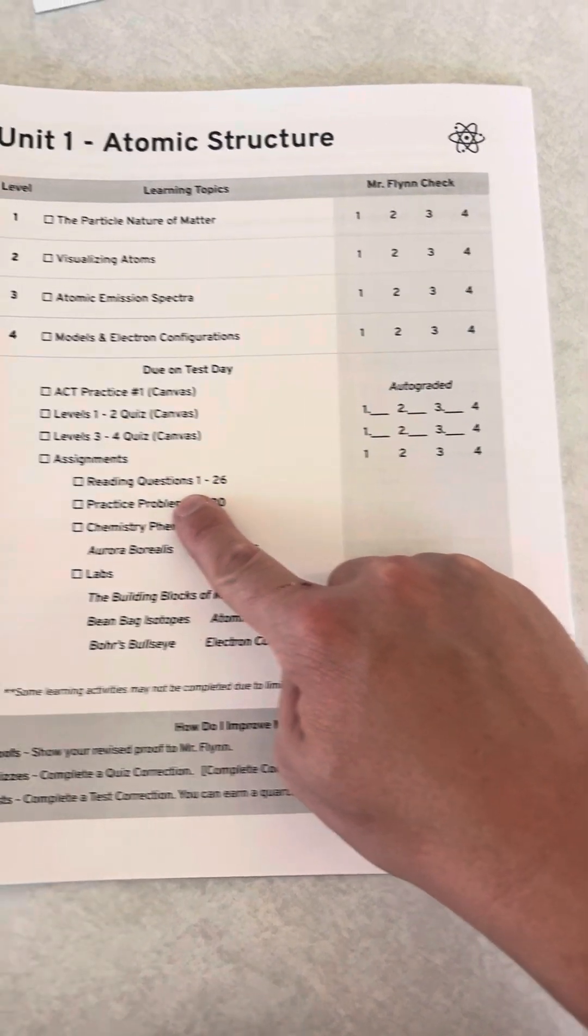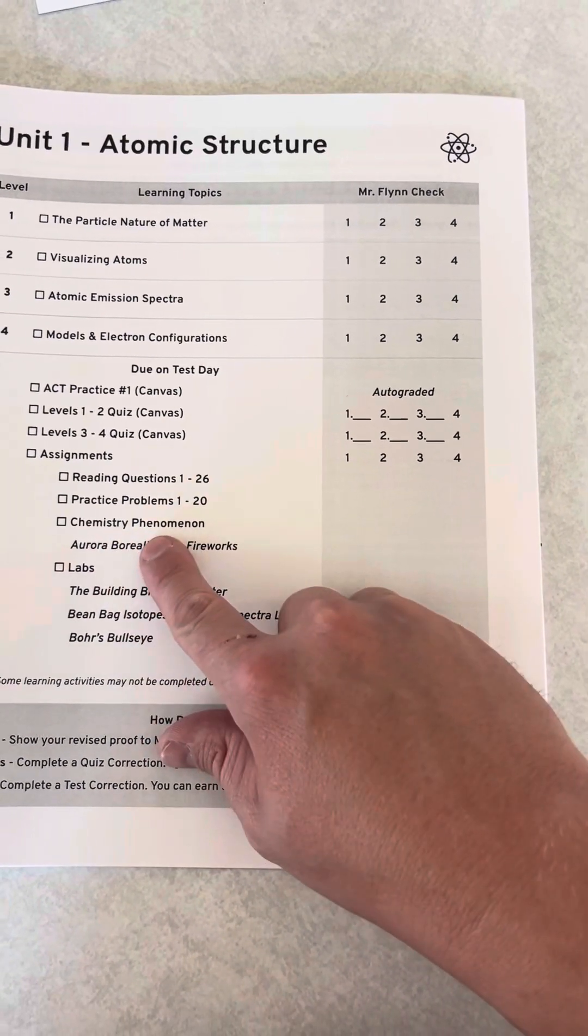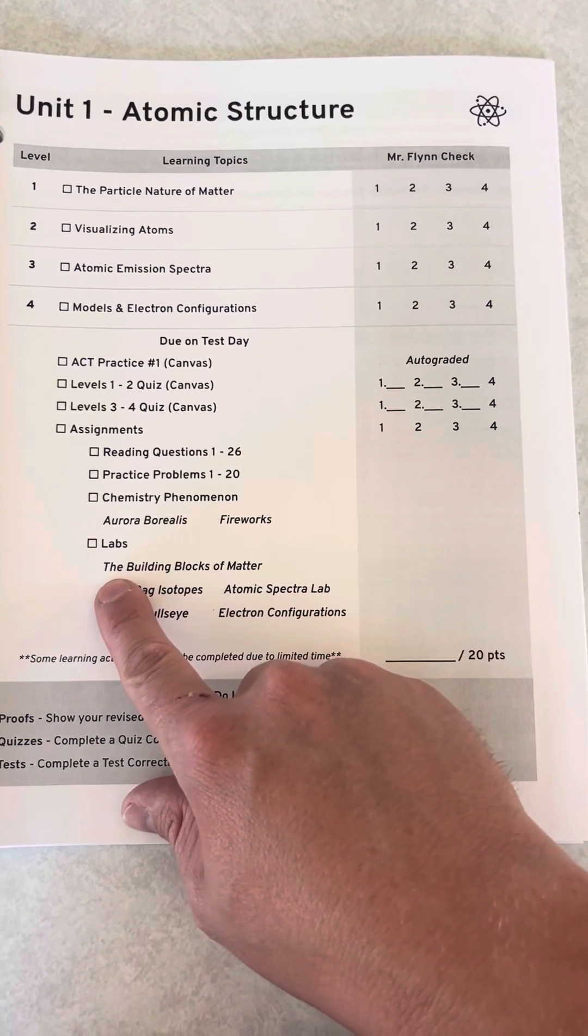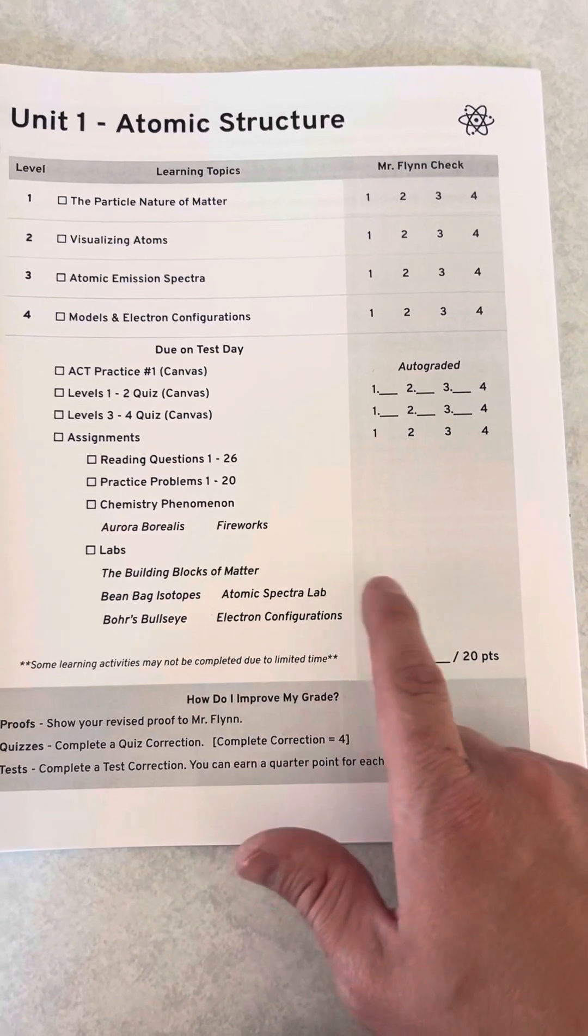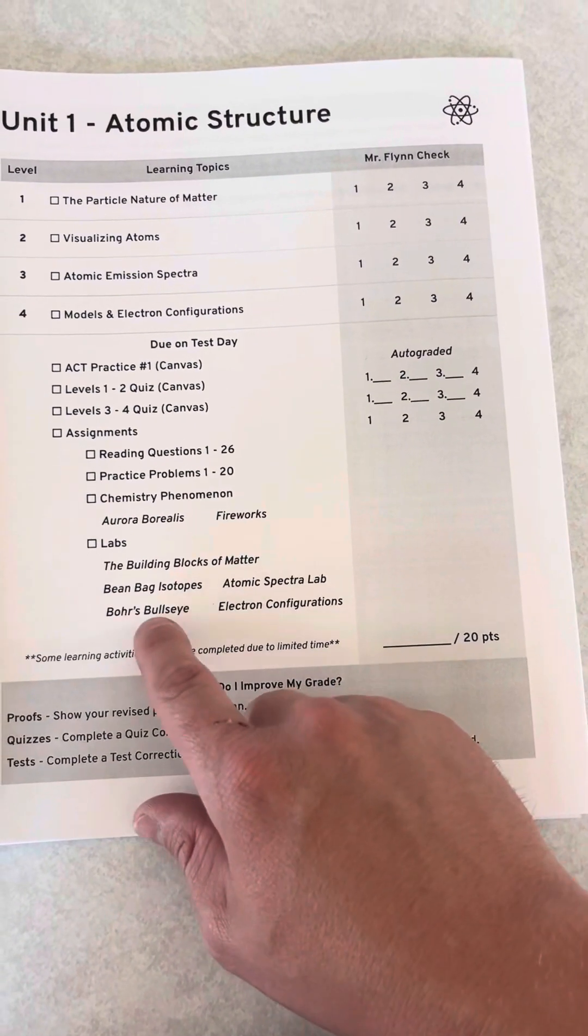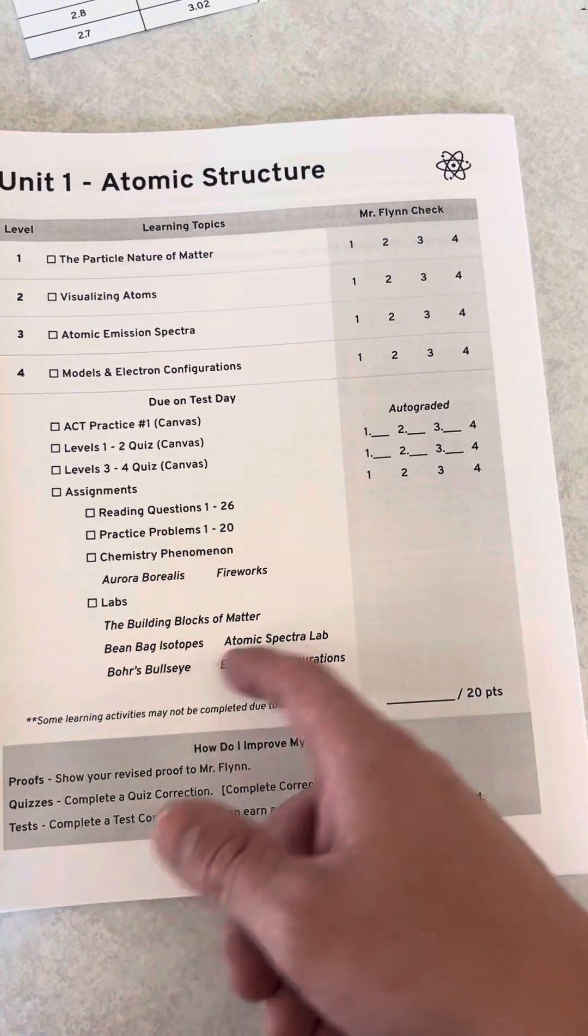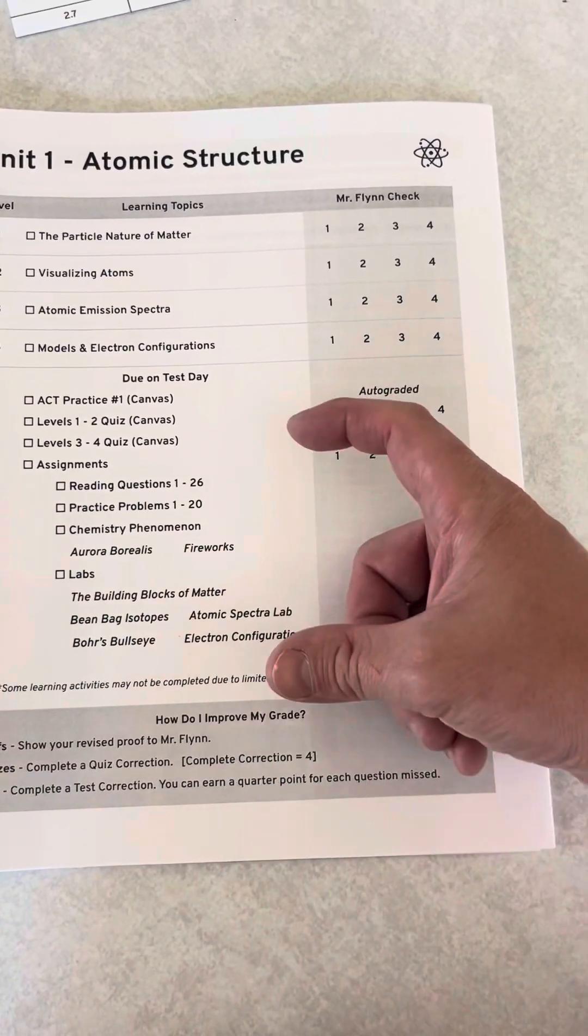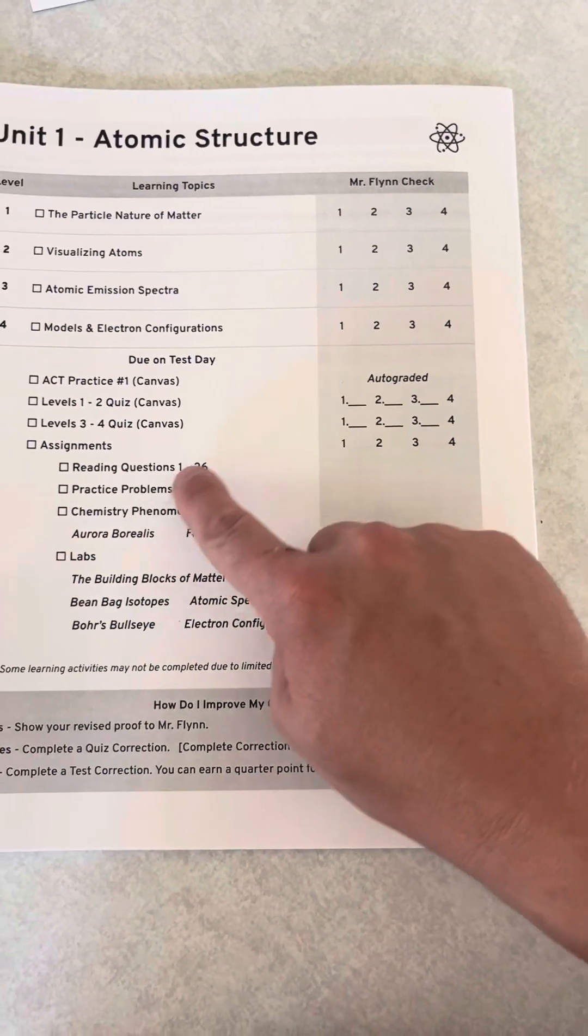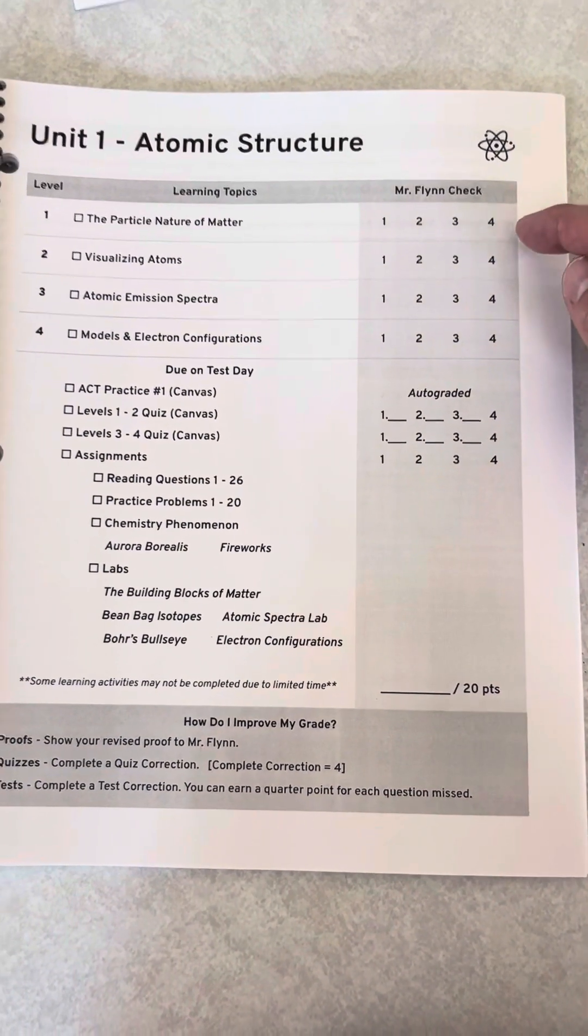I have them do reading. It's short. It's not a ton of reading. They have practice problems to work on. We have phenomenon that we're going to do in class. So we're going to learn about the auroras. We're going to learn about fireworks. We're going to do labs. We're going to have five labs. If we don't have time, like some learning activities may not be completed due to limited time. So I can come in here and be like, we don't have time for beanbag isotopes. I'll just cross it out and we won't turn it in. But the idea is they'll turn all of this in and I'll look at it collectively and say, well, did they get a one, two, three, or four? Because all I care about is this is just practice.